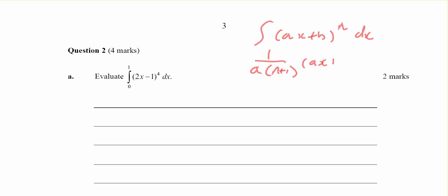(ax + b) to the n plus 1, and since I have a definite integral, I wouldn't be plussing c. So I'm going to have 1 on a, a is 2.